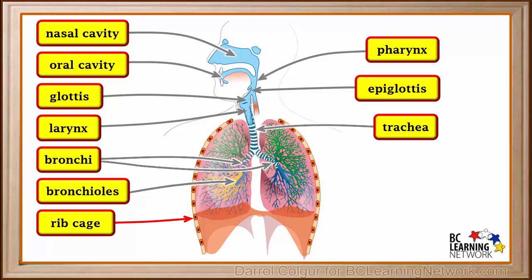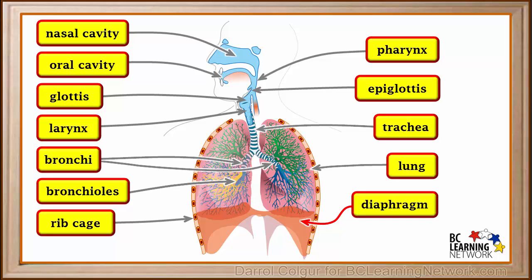The ribcage surrounds the lungs. These ribs protect the lungs and also play a role in breathing, as we'll see later. The lungs are the organs in which gas exchange takes place. We have a left lung and a right lung. A large parachute-shaped muscle at the bottom of the chest cavity is called the diaphragm. It separates the chest cavity from the abdominal cavity. The diaphragm plays a very important role in breathing.